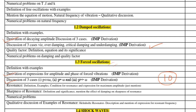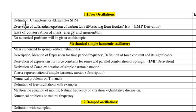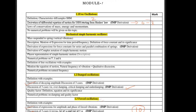Now let's start from the beginning. In free oscillation they are going to ask for the definition, characteristics, and examples of SHM — maximum two marks. Along with that, the derivation of the differential equation of motion for SHM starting from Hooke's Law is also an important derivation, sometimes asked for six to eight marks. Other than that, the law of conservation of mass, energy, and momentum may be asked for four to six marks. There are no numericals expected from this chapter.